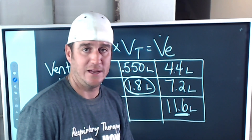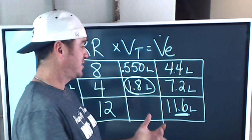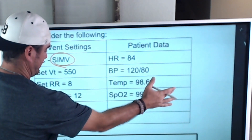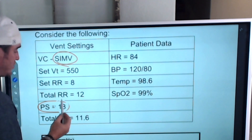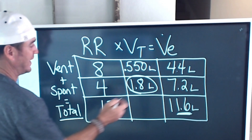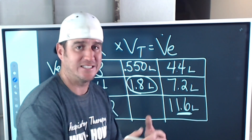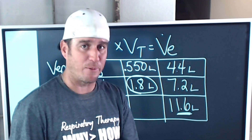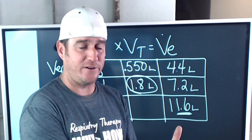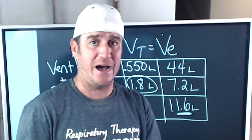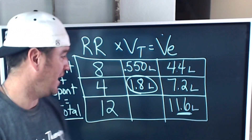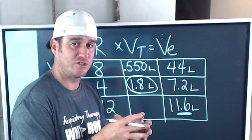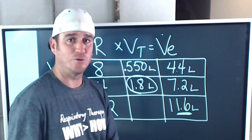Those spontaneous tidal volumes of 1.8 liters are excessive. The pressure support is 18, and with that pressure support of 18 we're getting 1.8 liter spontaneous tidal volumes — that is obviously an excessive tidal volume as a result of the excessive pressure support. That's why this patient is hyperventilating: their spontaneous tidal volumes are being augmented excessively by the pressure support, generating 1.8 liters per spontaneous breath.